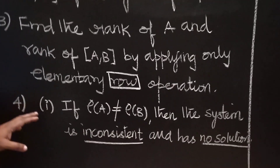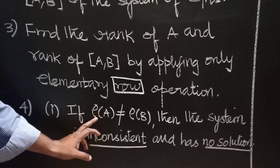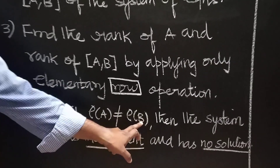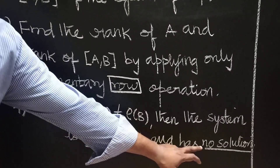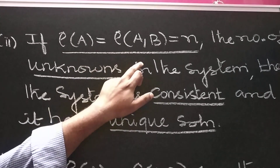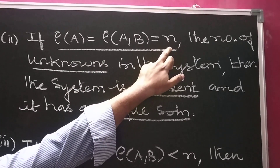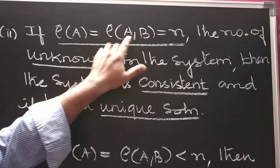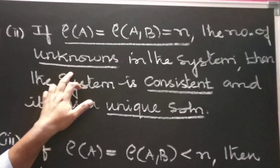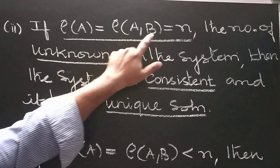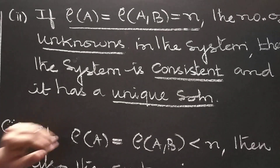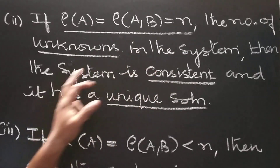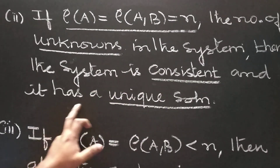Very important point. Step 4: if rank of A is not equal to rank of [A, B], then the system is inconsistent and has no solution. Second point: if rank of A equals rank of [A, B] equals N, where N is the number of unknowns in the system, then the system is consistent and it has a unique solution.